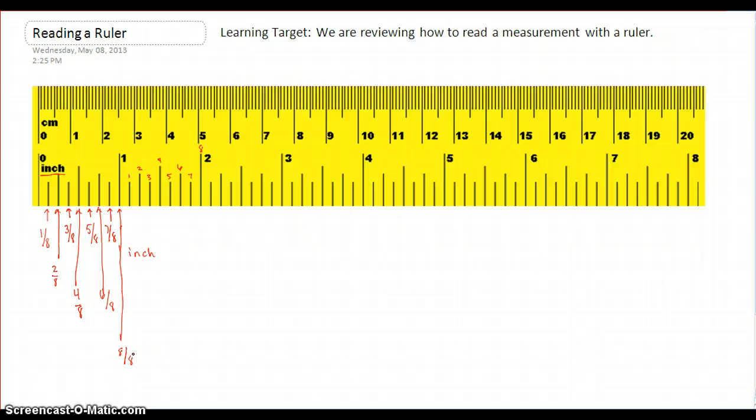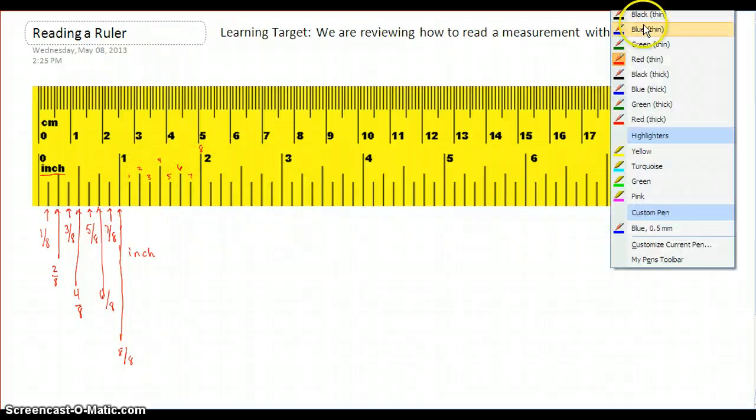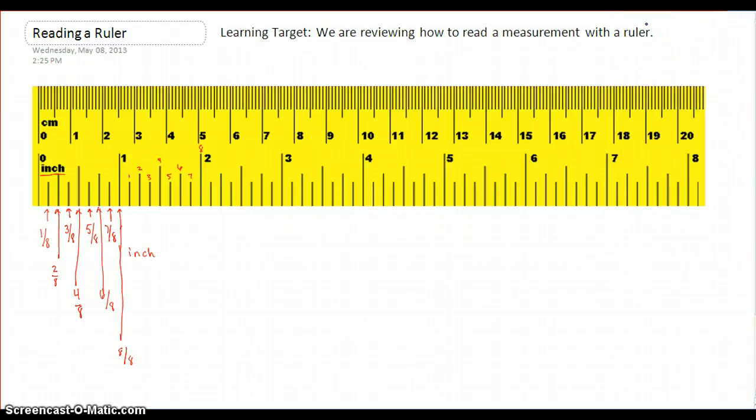So what happens is, on a ruler, you have to be fairly good with knowing your fractions. So I know that it was cut up into eighths because there are eight hash marks. And because we are already good with fractions, this is why it became one inch. What is eight over eight? Well, eight over eight is one. So that's how we know that this was the one inch mark.